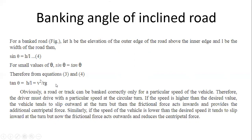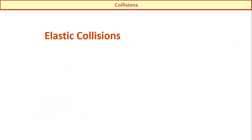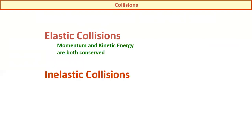Using this equation we can solve mathematical problems related to the banking angle of an inclined road. Our next topic is collision. Collisions have two types: elastic collision, in which both momentum and kinetic energy are conserved; and inelastic collision, in which only momentum is conserved.